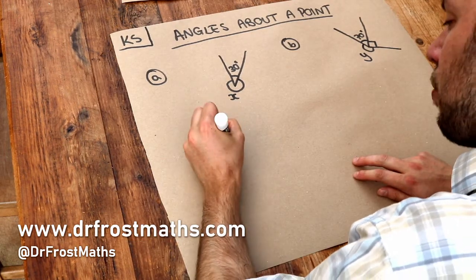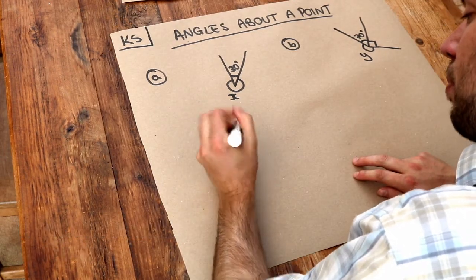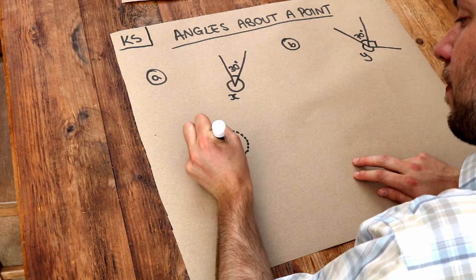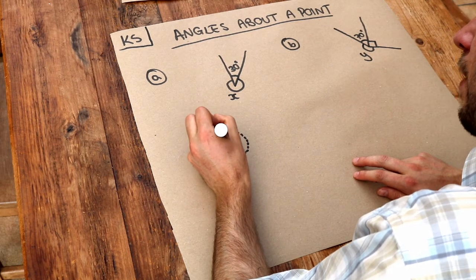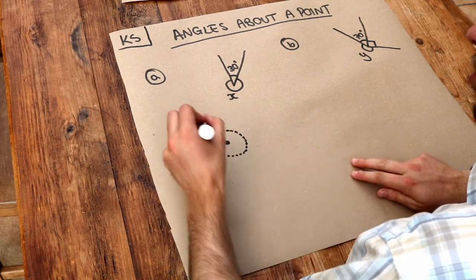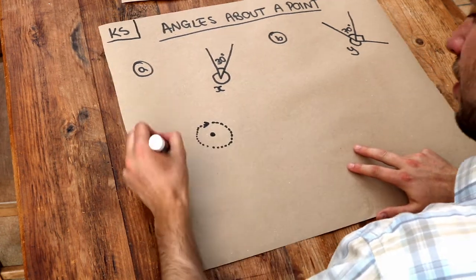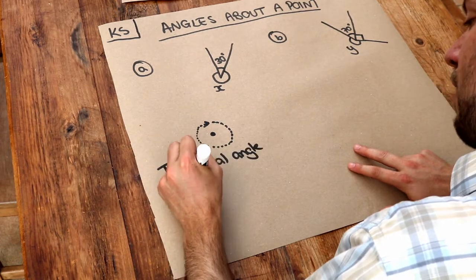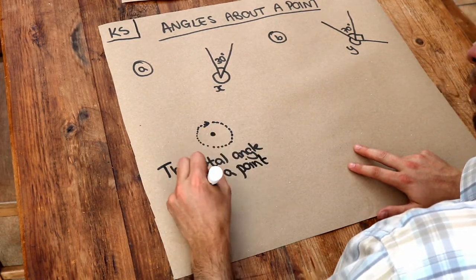The one thing you need to know for this video is that if you were to spin around a point, the total amount you've turned would be 360 degrees. So the total angle about a point is 360 degrees.